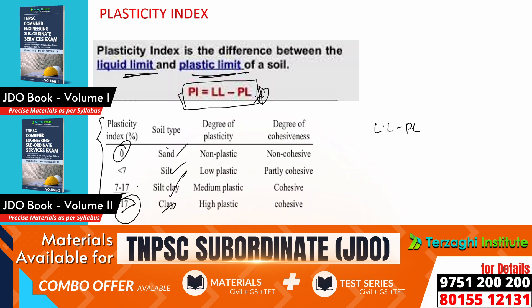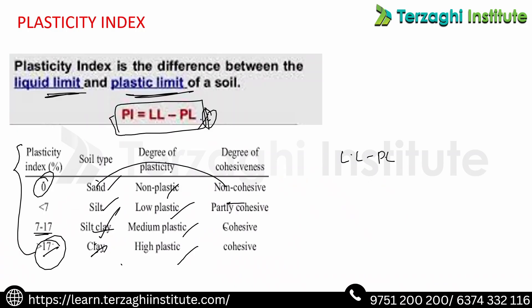Plasticity index classification: more than 17 is high plastic clay. Non-plastic, low plastic, medium plastic, and high plastic categories apply. Sand is non-cohesive, silt is partly cohesive, and clay is cohesive.